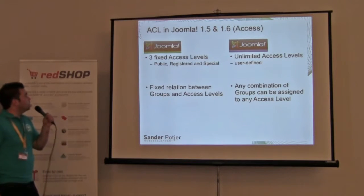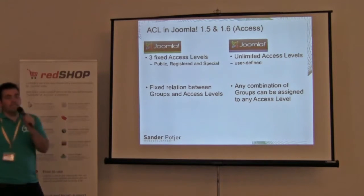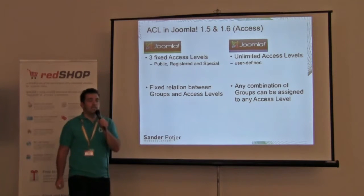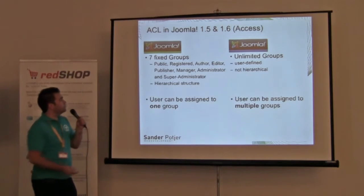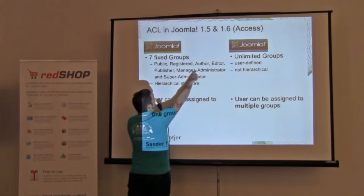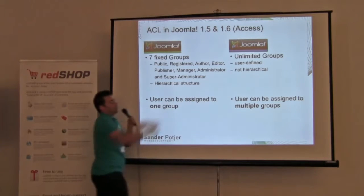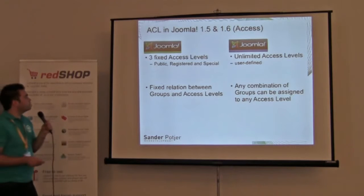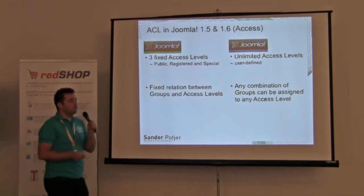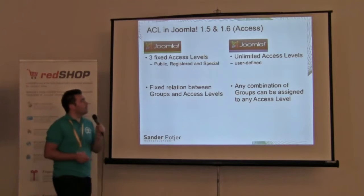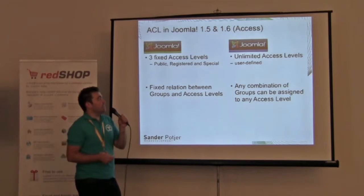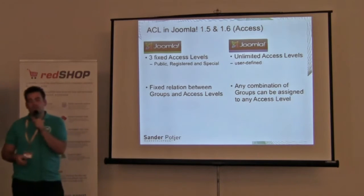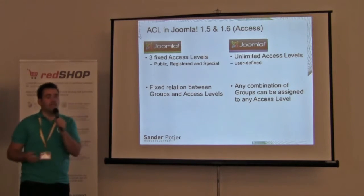In 1.5, we had three fixed access levels: public, registered, and special — where special contained all user groups above registered. There was a fixed relationship between the groups and access levels. In 1.6, we can define unlimited access levels and create any combination of access level and user groups.